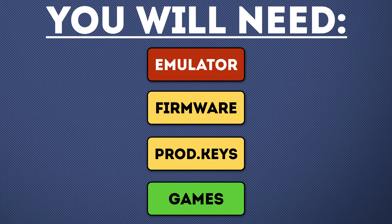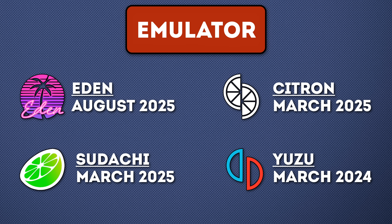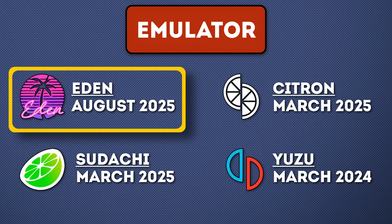To begin we're going to need to download a few files. The first thing you're going to need is an emulator — that is the application that actually plays the games. There are a few choices available. I would suggest going with Eden today because that is constantly being updated; as of making this video the latest update came out even today. I'll include the links to all of these emulators in the description.